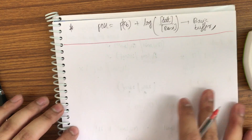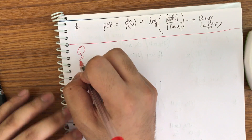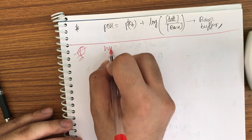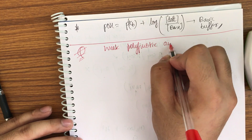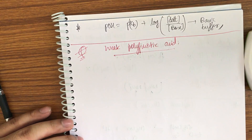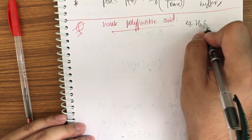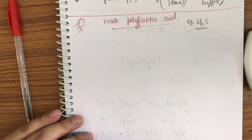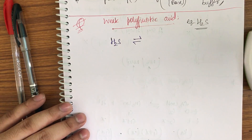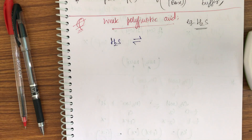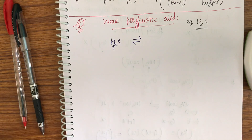Next topic: weak polyprotic acids. There was a related JEE question from 2013. Let's take H₂S as an example to show how to do calculations. H₂S has two protons, so it will dissociate two times.